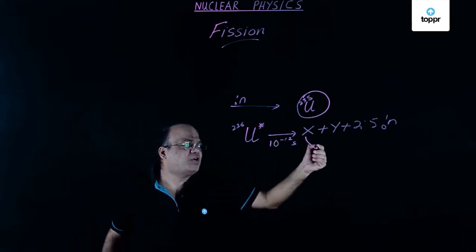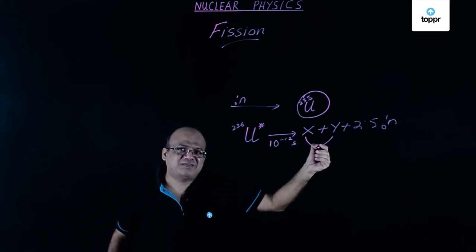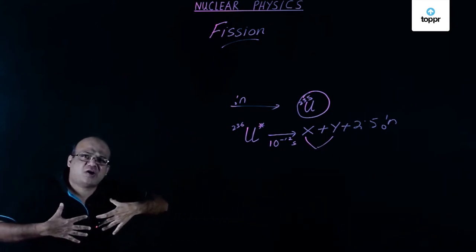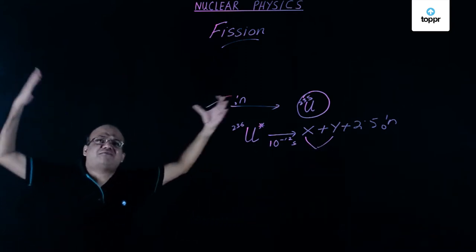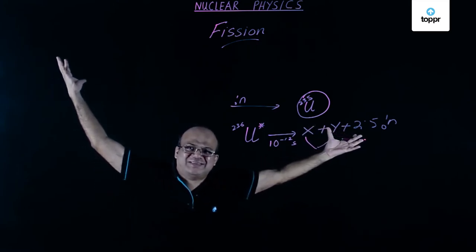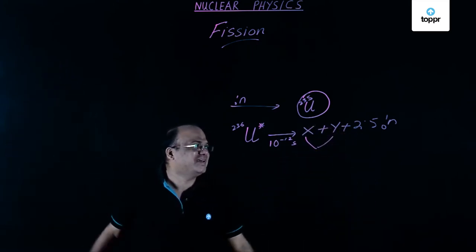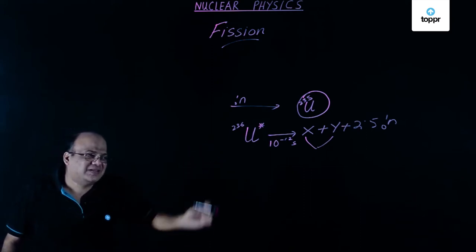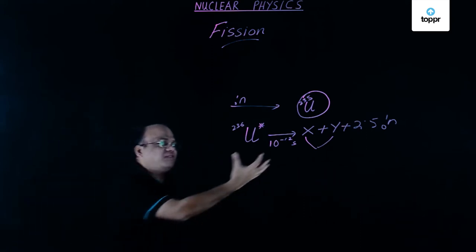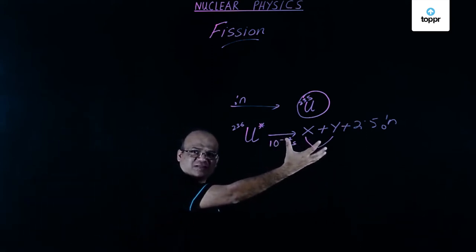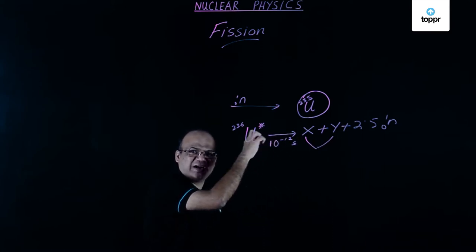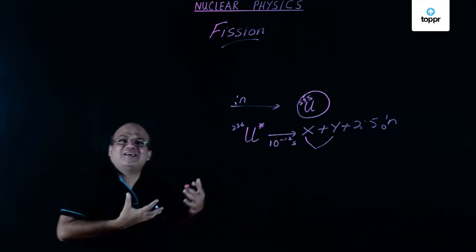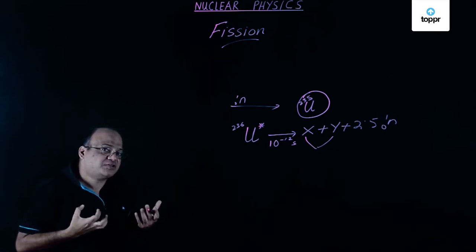These are called fission fragments. These fission fragments fly out with a lot of kinetic energy. Neutrons also pick up some energy. And these fission fragments are typically radioactive, so some energy goes as radioactivity of fission fragments.